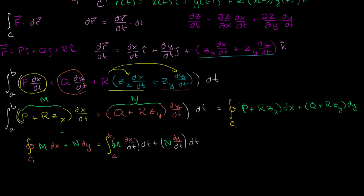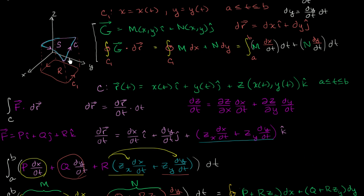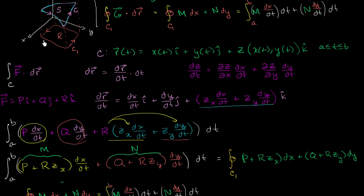Where we left off in the last video, we had expressed our line integral around the boundary of our surface. So this is F dot dr, where our path is this boundary right over here, this path C. We had expressed it in terms of a line integral around path C1, which is the boundary of region R. And the reason why this is going to be valuable to us is now we can directly apply Green's Theorem to turn this into a double integral over this region, the region that it is actually bounding.